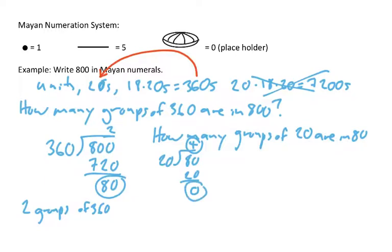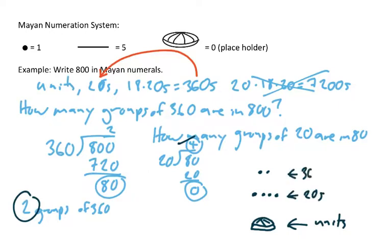As I draw this, I'm going to draw it from bottom to top starting in the units place. I have no units. So I'm going to start by drawing my little conch shell. That would be my units place. Go above that to find out how many groups of 20 you need. You need four of those. So four groups of 20 would simply be four dots. And then you need to know how many 360s we have. We have two groups of 360s. And that is what 800 would look like in Mayan numerals.